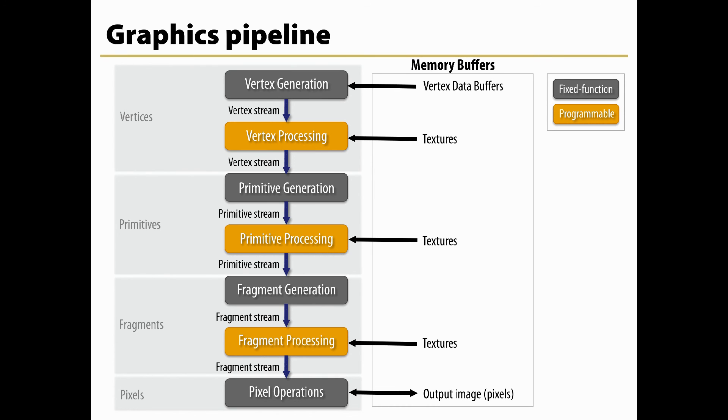Lastly, the fragment data is written to the framebuffer. Masking operations allow the user to prevent writes to certain values. Color, depth, and stencil writes can be masked on and off, and individual color channels can be masked as well.